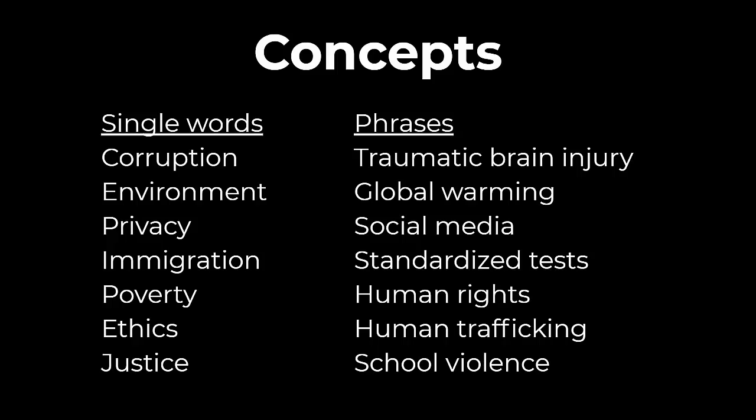Concepts can be single words or short phrases. Single word concepts include things like corruption, privacy, poverty, and ethics. Phrases are usually two to three words that mean something very specific when next to each other in order. For example, we might know what trauma, brain, and injury mean individually, but when you put 'traumatic brain injury' together, that means something very specific. Searching on relevant phrases can help reveal evidence to support your position or answer a research question.